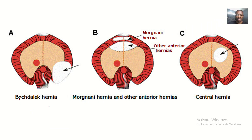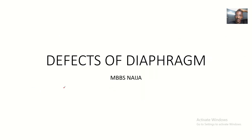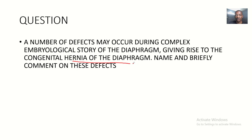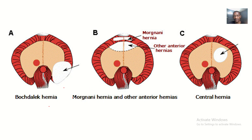Good day guys, today we'll be talking about defects of the diaphragm. This is the MBBS Manager channel — kindly subscribe if you haven't. The question is: a number of defects may occur during the complex biological development of the diaphragm, and these defects give rise to congenital hernias of the diaphragm. Name and briefly comment on the defects that can lead to hernia.